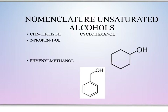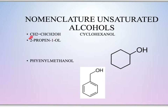Once we become comfortable with identifying alcohols and can look at the chemical formula and determine that it's an alcohol, we can proceed to naming it. When we name the alcohol, the parent name is going to end in OL, and that OL ending indicates that we have an alcohol present. The first thing we want to do is find the longest chain of carbons that the OH is attached to, and we number the carbons starting at the end closest to the OH.